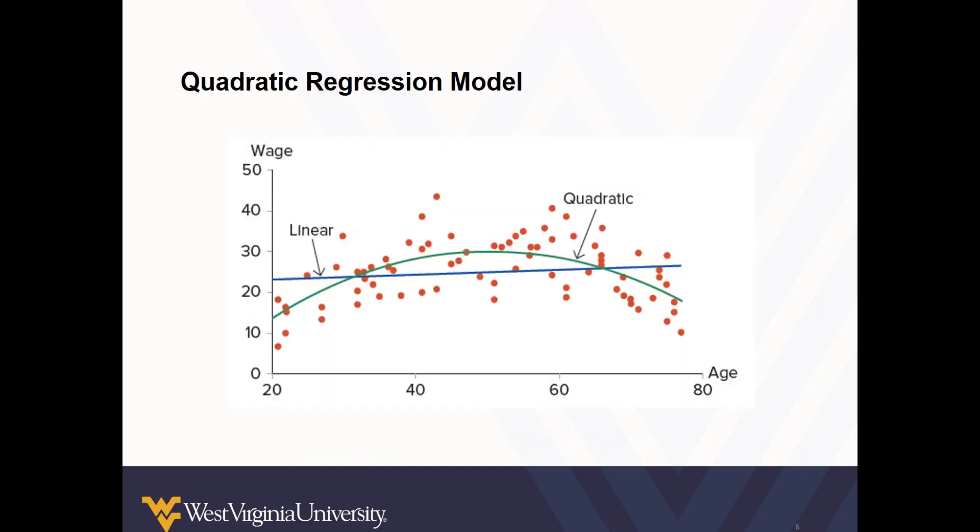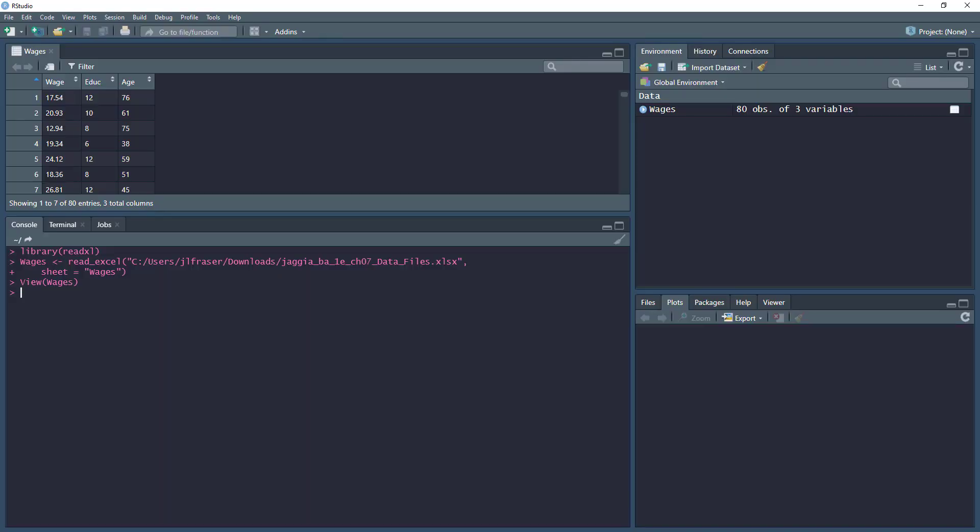Here we have a scatter plot of wage and age and we can see both the linear trend line as well as the quadratic trend line. You can think for yourself to decide which one seems like it is a better fit. If you want to generate a scatter plot in R, we can do that using the plot function.